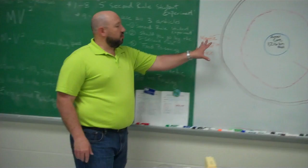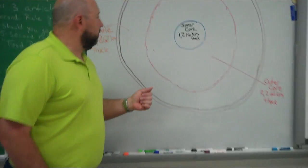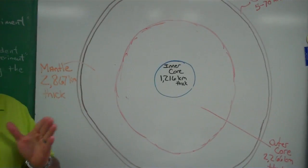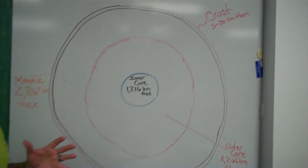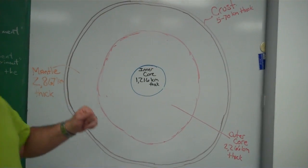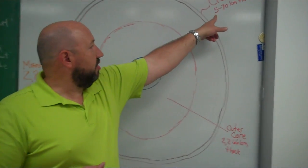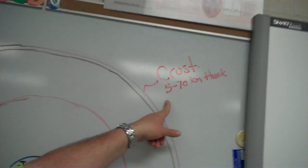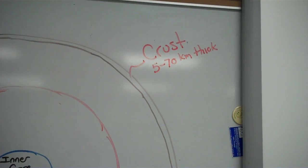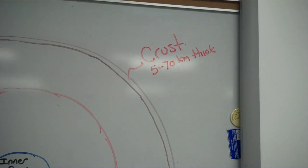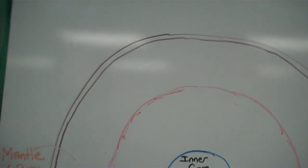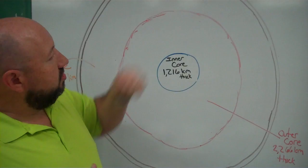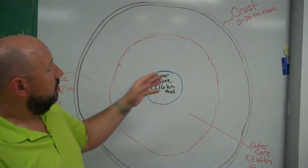So, in my horribly drawn model of the Earth, we have three very distinct layers, with the third layer actually being broken into two parts. The outer layer is the crust. The crust is extremely thin in comparison to the rest of the planet — think of a slice of bread, the outer crust, or the skin of an apple. Very thin layer.